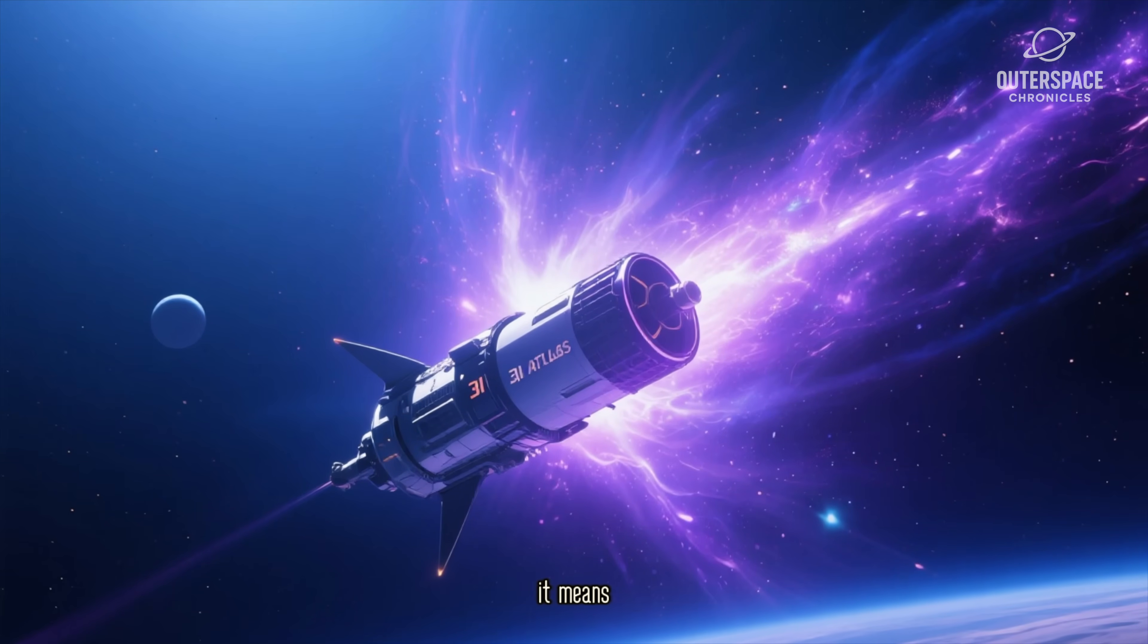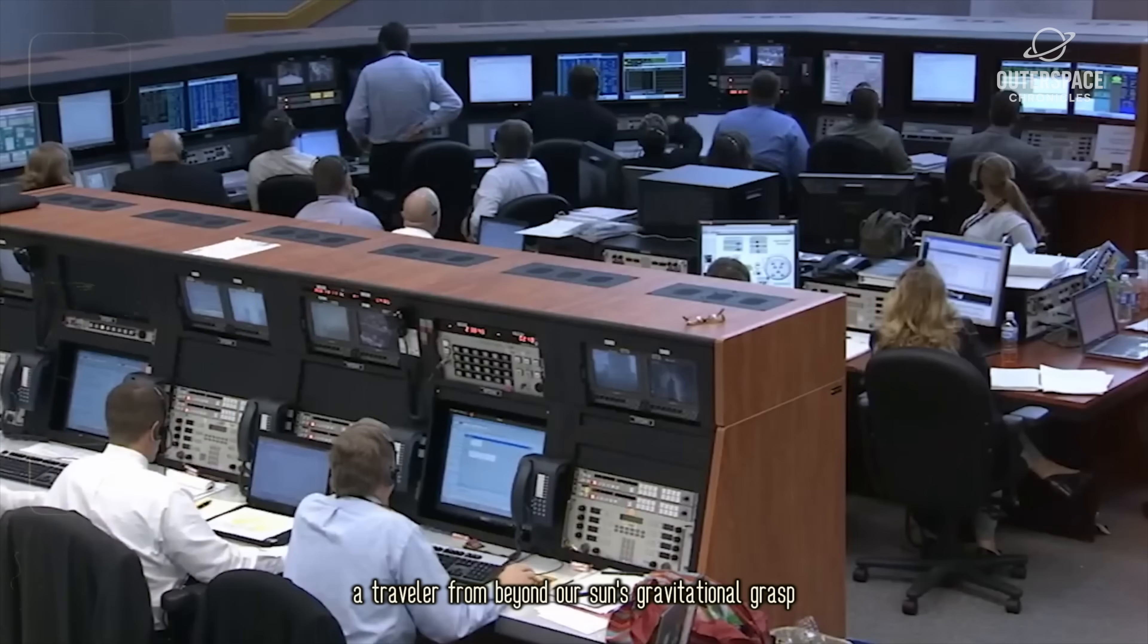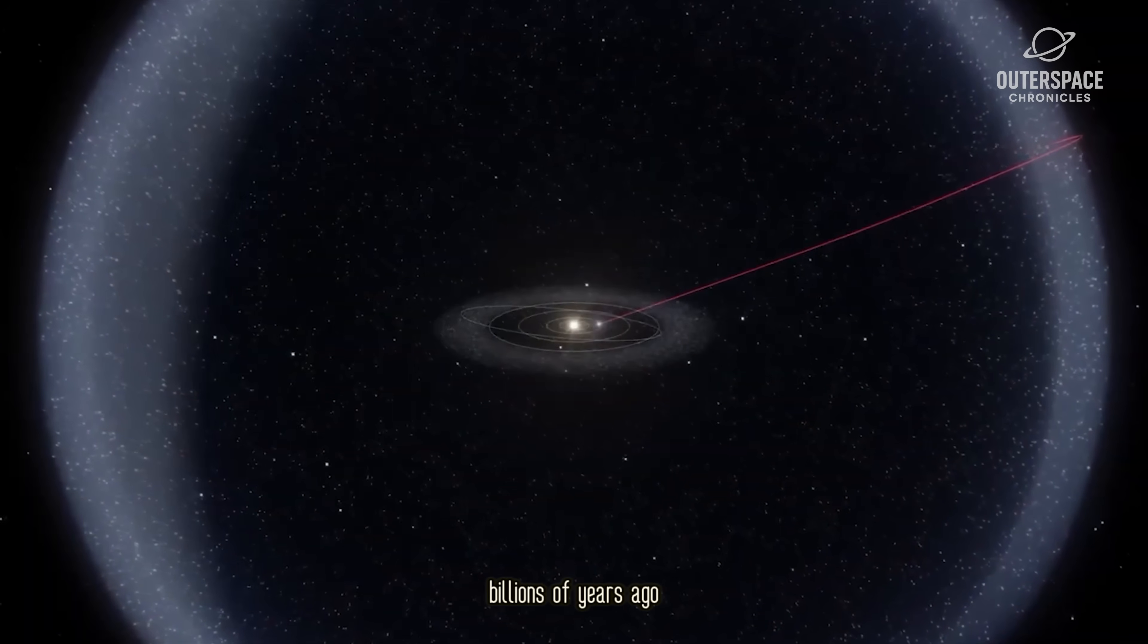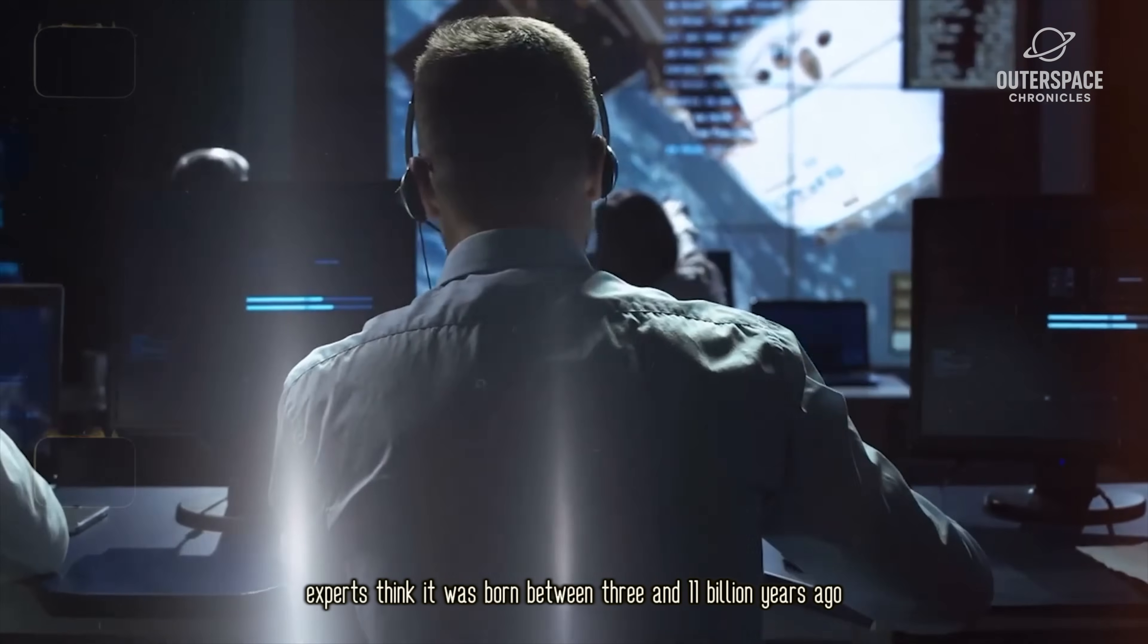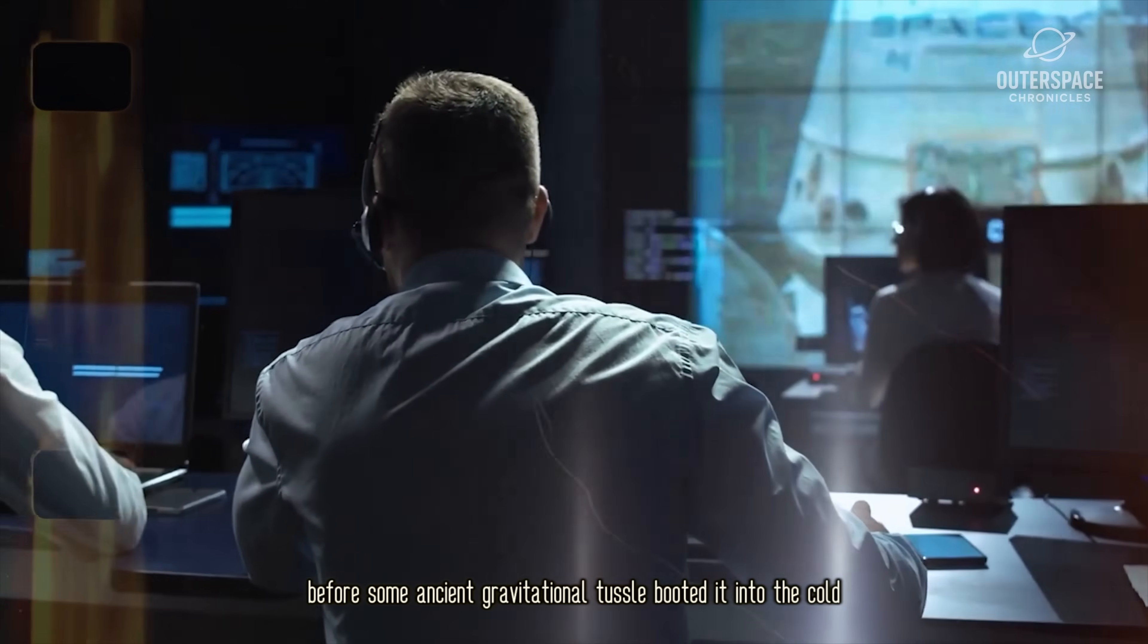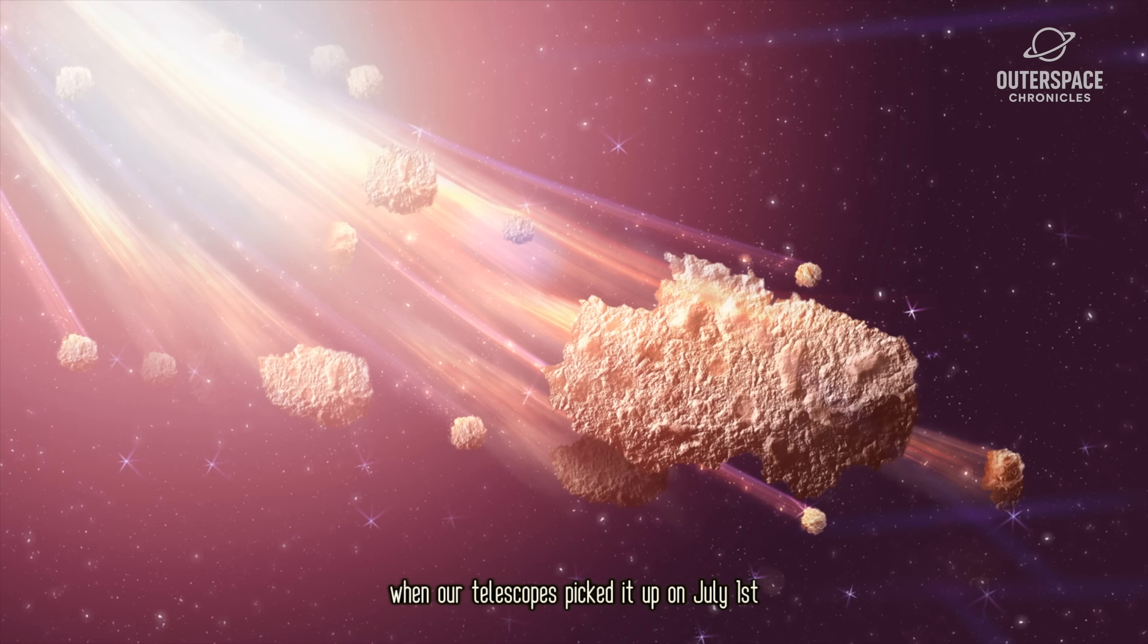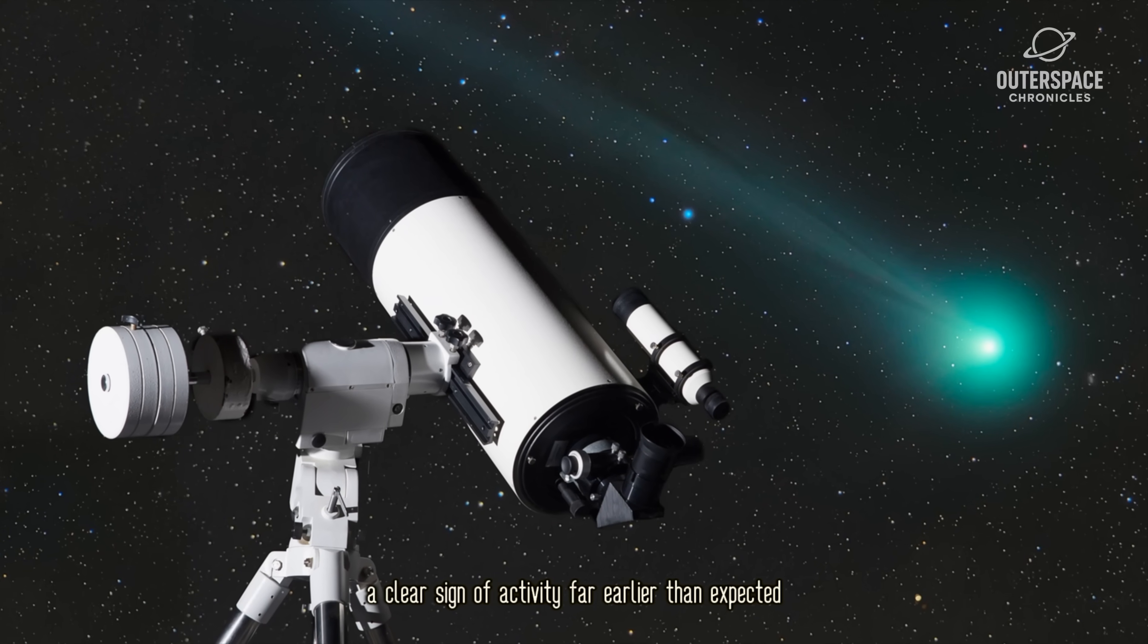Of all these visitors, 3I Atlas absolutely wins the headline jackpot. That 3I label means it's only the third object ever certified as truly interstellar, a traveler from beyond our Sun's gravitational grasp. It's a message in a bottle thrown from an unknown shore billions of years ago. Experts think it was born between 3 and 11 billion years ago, coalescing around a distant star before some ancient gravitational tussle booted it into the cold dark void of interstellar space.